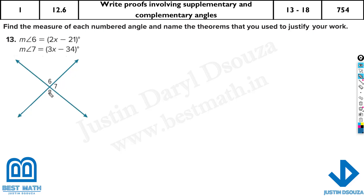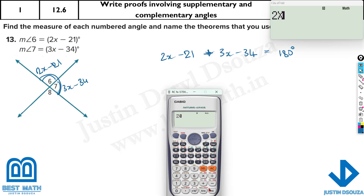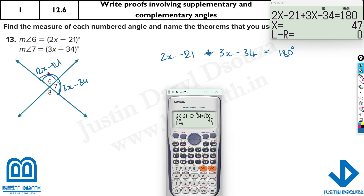Here, looking at this, I feel this is vertical angles — the theorem we'll be using is the vertical opposite angle theorem. Now angle 6 and 7 are given. What we need to do is find x. 2x minus 21 — actually it's 3x minus 34 — you can see these two are a linear pair, so when you add them up, they must be 180 degrees. So 2x minus 21 plus 3x minus 34 will be equal to 180 degrees. I'm going to show you in the calculator: type 2x minus 21 plus 3x minus 34 equals 180. Press shift and solve, and the answer is x equals 47 degrees.